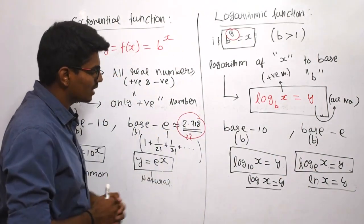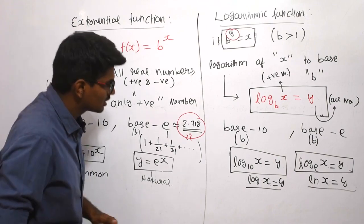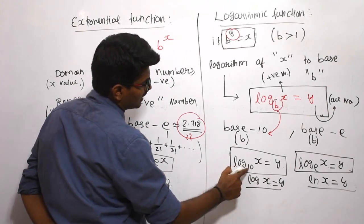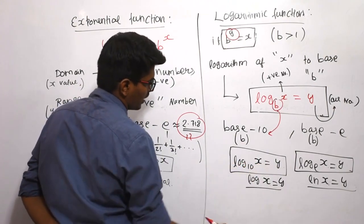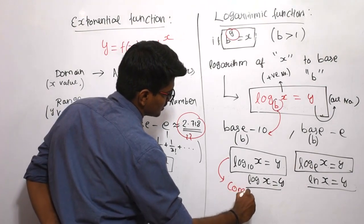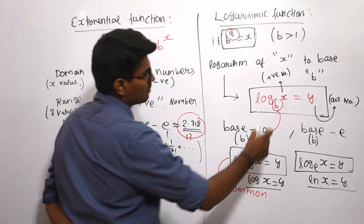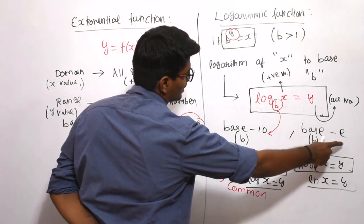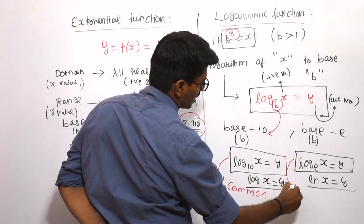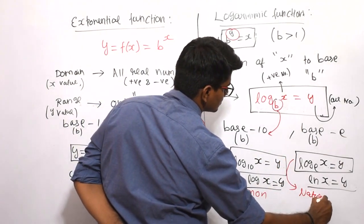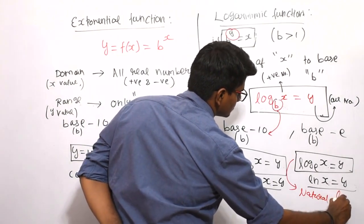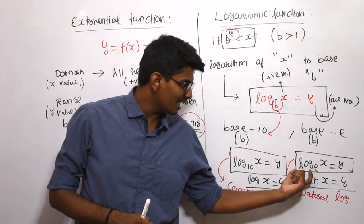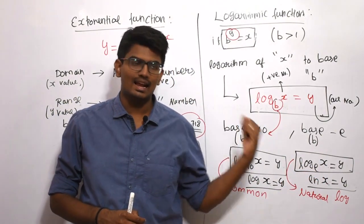If the base value is 10, then log base 10 of x equals y, and this is called the common logarithm. And if the base value is e — which is approximately 2.718 — then the logarithm is called the natural logarithm. Generally, log base 10 is represented simply as log, and log base e is represented as ln.